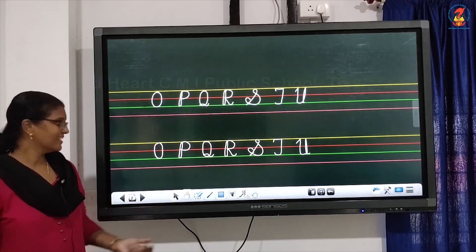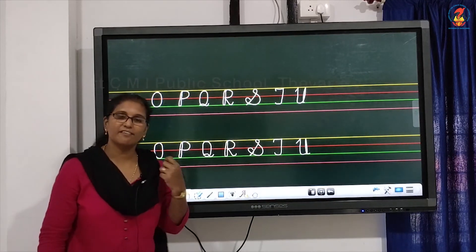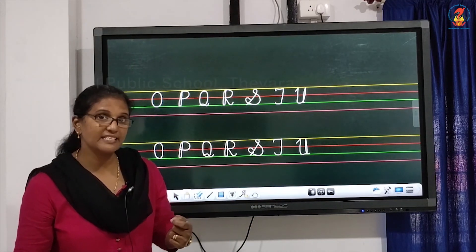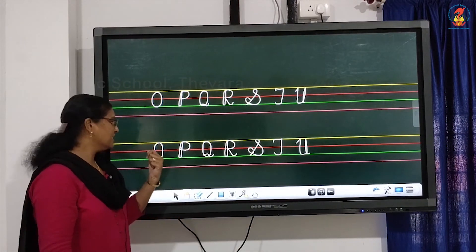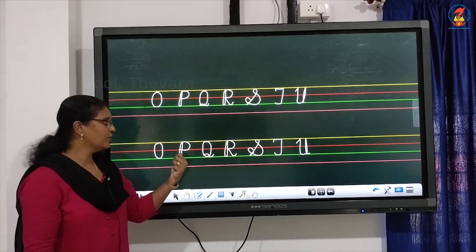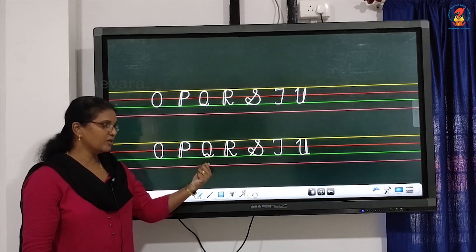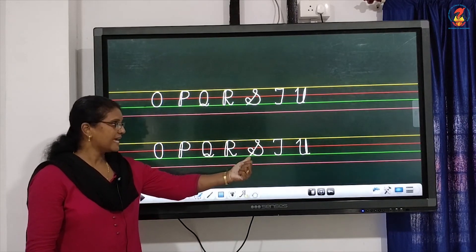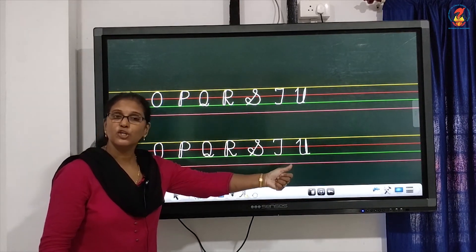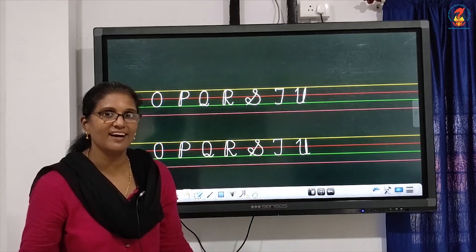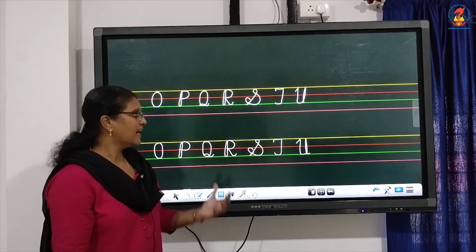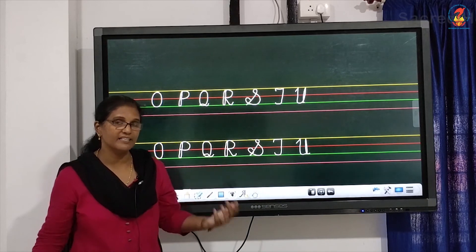You are ready. So, let's repeat the letters children. Yeah. Starting from O, P, Q, R, S, T and U. U for umbrella. Yes. I think all of you will have understood. Yes, my little children. Yes. That's great.